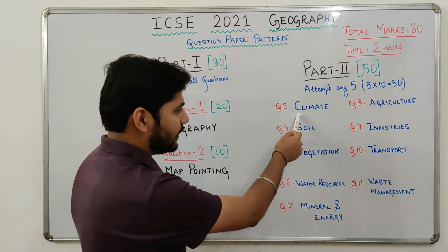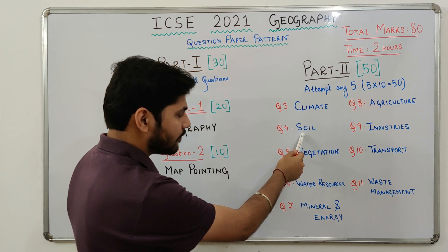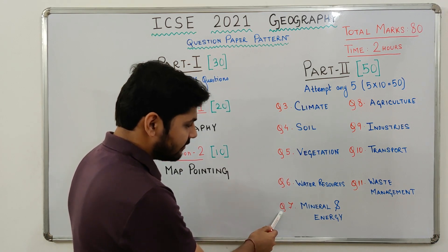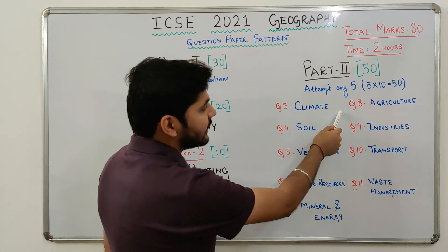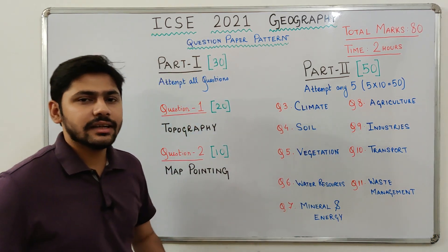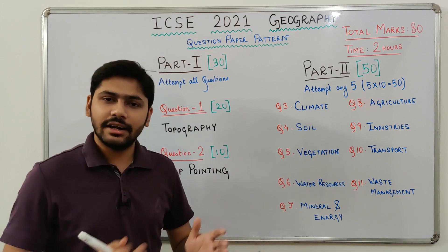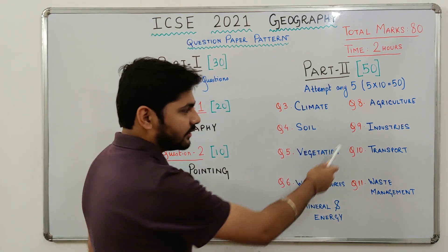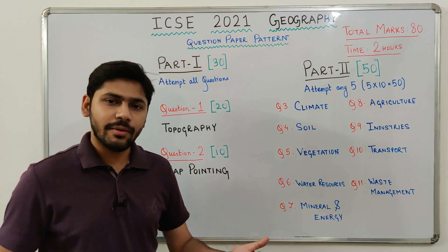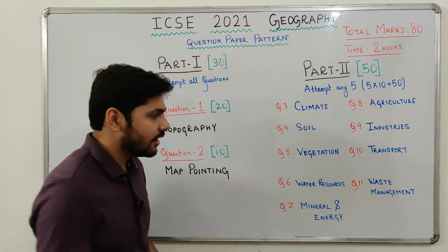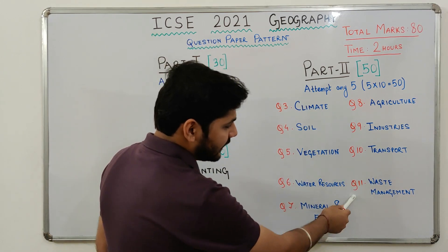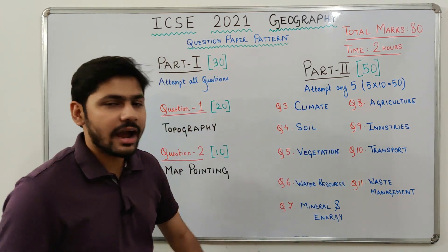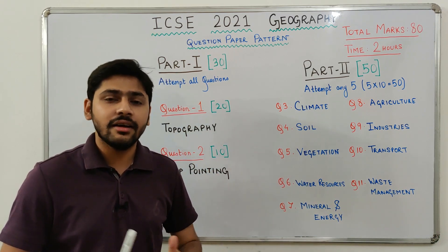Question 3 will be from climate, Question 4 from soil, Question 5 from natural vegetation, Question 6 from water resources, Question 7 from mineral and energy resources, Question 8 from agriculture (covering all three chapters: introduction to agriculture, food crops, and cash crops), Question 9 from industries (agro-based and mineral-based), Question 10 from transport, and Question 11 from waste management. Out of these nine questions, you have to attempt any 5 for 50 marks.